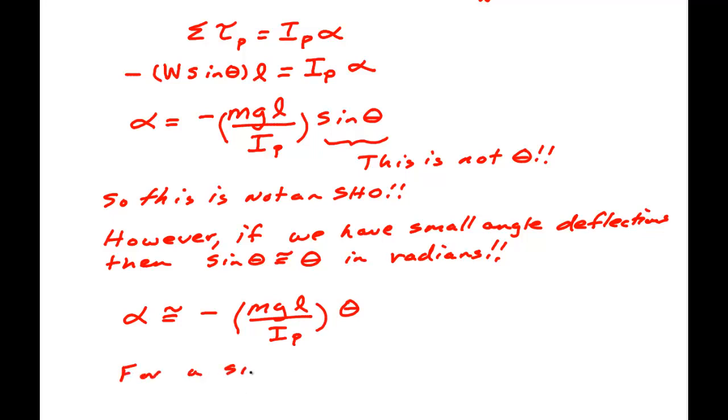For a simple pendulum, I_P is equal to the mass times R squared. But R squared, in our case, is L squared.